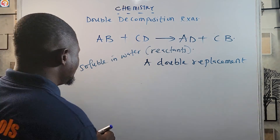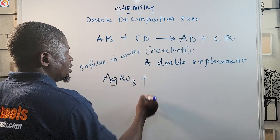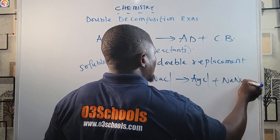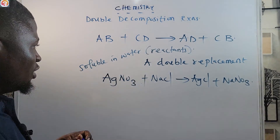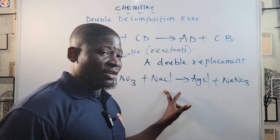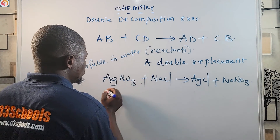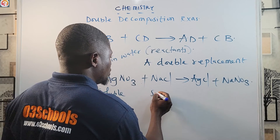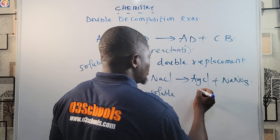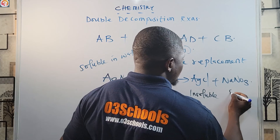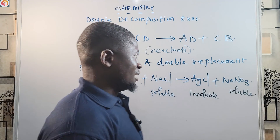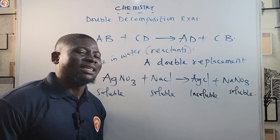For example, AgNO₃ reacting with NaCl gives AgCl plus NaNO₃. The reaction is balanced: Ag is one on each side, Cl is one on each side, NO₃ is one on each side. AgNO₃ and NaCl are both soluble in water, while AgCl is insoluble. NaNO₃ is soluble. This is how double decomposition reactions work — it is a double replacement reaction.